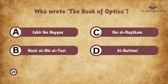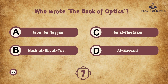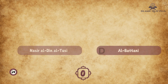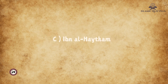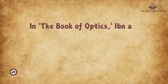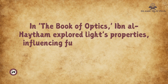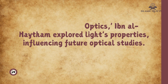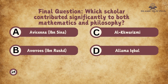Question 24: Who wrote The Book of Optics? A. Jabir ibn Hayyan, B. Nasir al-Din al-Tusi, C. Ibn al-Haytham. The correct answer is C. Ibn al-Haytham. In The Book of Optics, Ibn al-Haytham explored light's properties, influencing future optical studies.